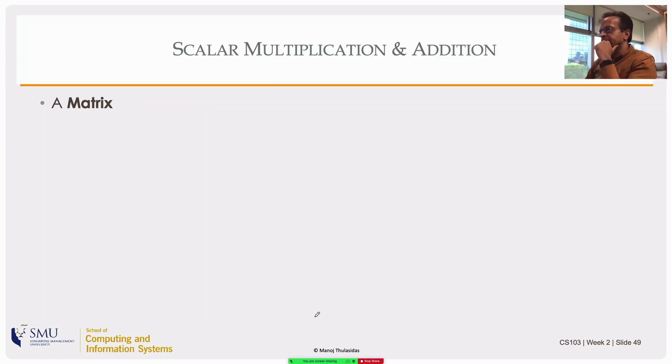Now let me define scalar multiplication for a matrix. I have a matrix here and I'm multiplying it by a number, three. You multiply each element by the number three, identical to the vector multiplication, just extending it to matrices.